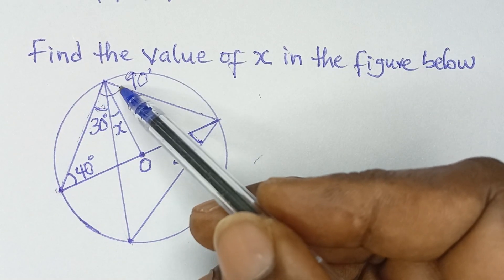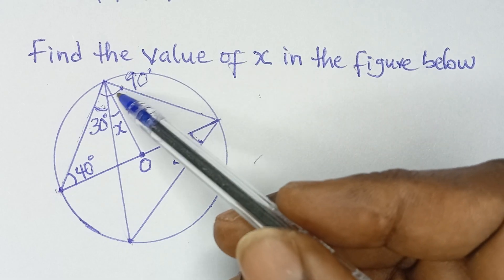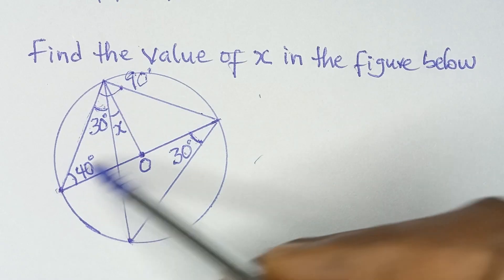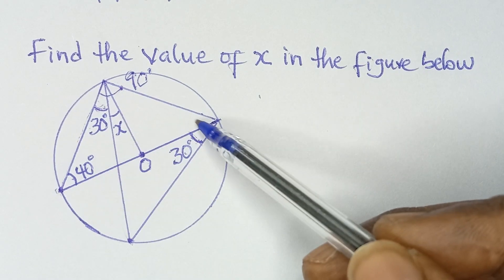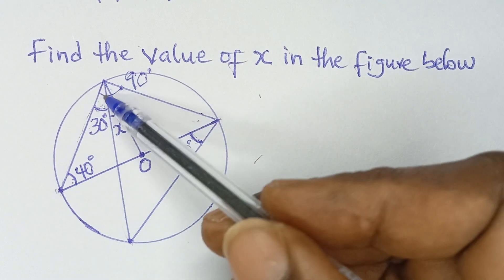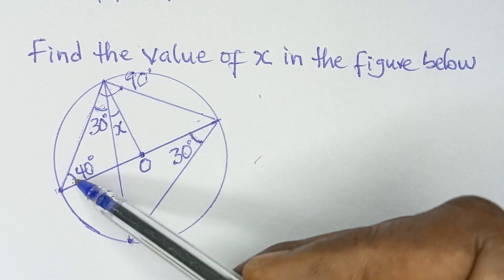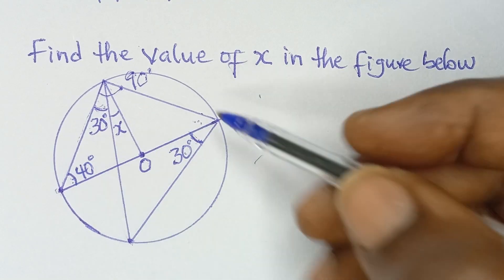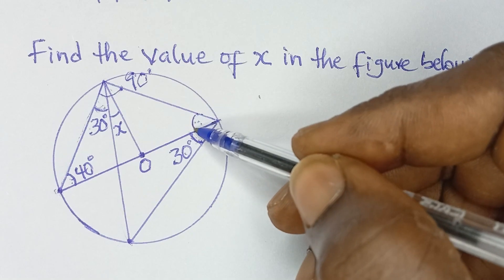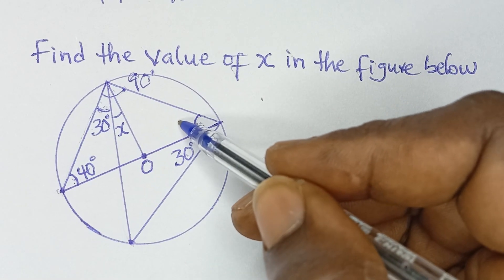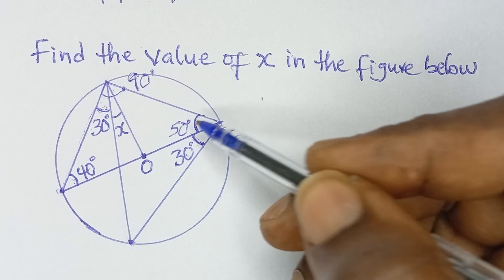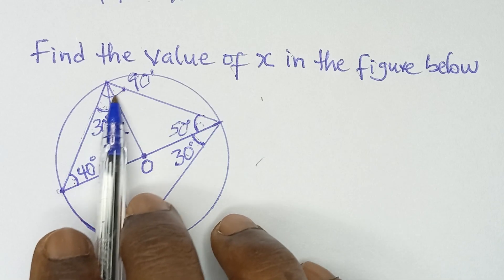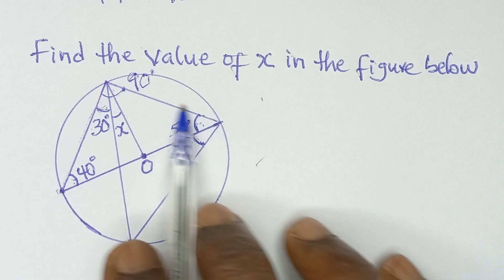Now, looking at this triangle: since this angle is 90 degrees, the sum of the other two angles also has to be 90, so that all three angles make up 180 degrees. If one angle is 40 degrees, then this part will be 90 minus 40, which gives us 50 degrees. So 40 plus 50 plus 90 gives us 180 — the sum of angles in a triangle adds up to 180.